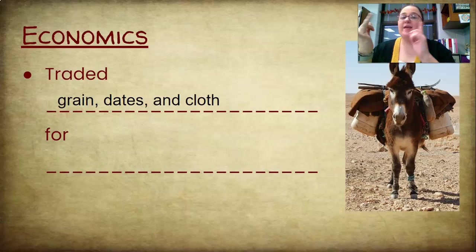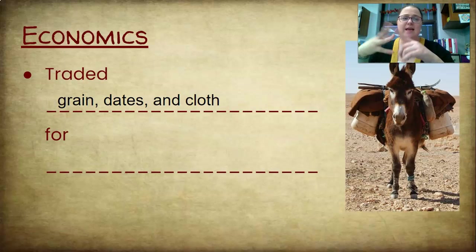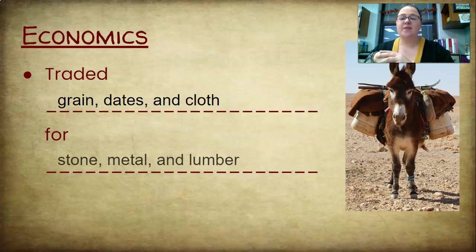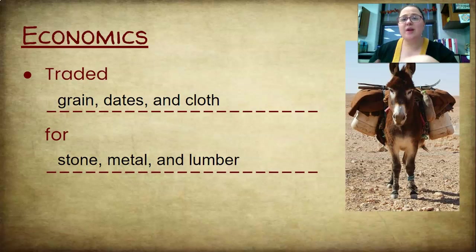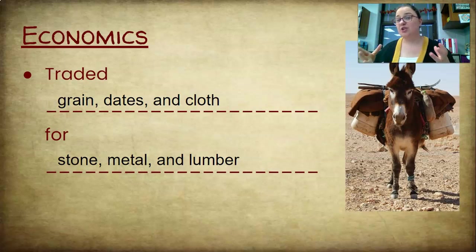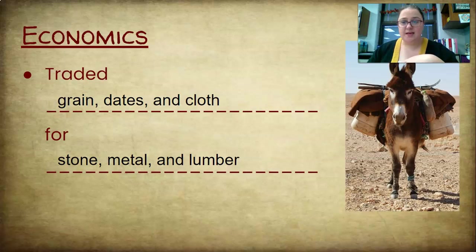In Mesopotamia, they had grain, dates, and cloth — among many other things — and they would trade those for things like stone, metal, and lumber. Especially in the southern part of Mesopotamia, where it was drier and there weren't many trees, lumber was important for building homes, making carts, and other things. Not all metal could be found in every part of Mesopotamia, so those were key trade goods. Stone, metal, and lumber were obtained by giving grain, dates, and cloth.